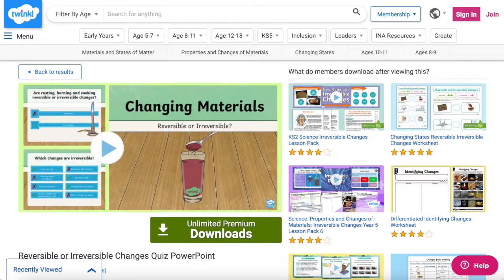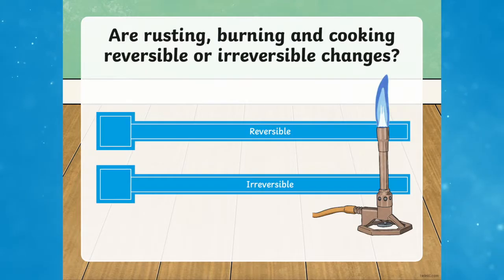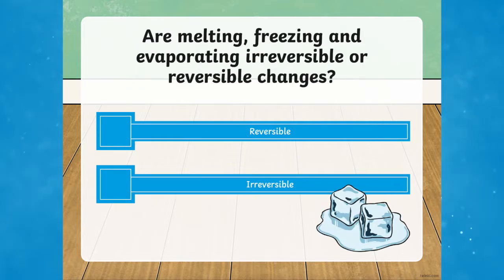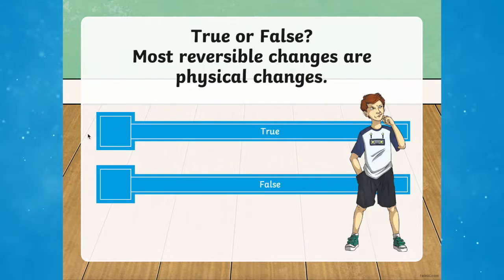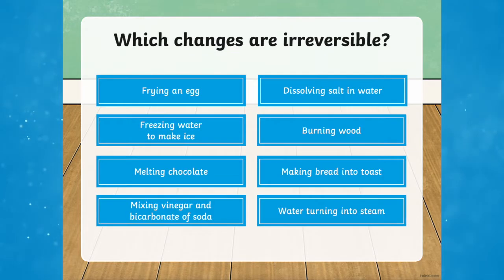A fun way to round this topic off is by checking your children's knowledge through this reversible or irreversible changes quiz. Use this quiz to get your children thinking about reversible and irreversible changes from rusting, burning, cooking, melting, freezing, and evaporating. This quiz has multiple choice questions throughout, featuring fantastic information to better your pupils' understanding on reversible and irreversible changes.